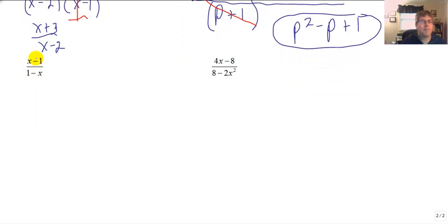Our third sample problem: x minus 1 over 1 minus x. It would be incorrect to cancel the x's and cancel the 1's. What we are going to do here, these are opposites. x in the numerator, x is positive, 1 is negative. In the denominator, 1 is positive, x is negative.